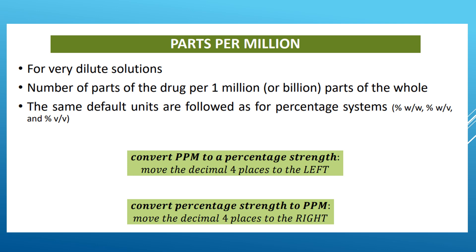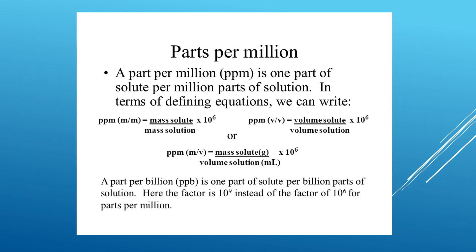Parts per million and parts per billion are units of measure for a very dilute solution. PPM is one part of a solute per million parts of solution. The equations are: PPM (w/w) = mass of solute ÷ mass of solution × 10⁶; PPM (v/v) = volume of solute ÷ volume of solution × 10⁶; PPM (w/v) = mass of solute in grams ÷ volume of solution in mL × 10⁶.